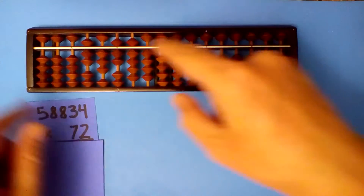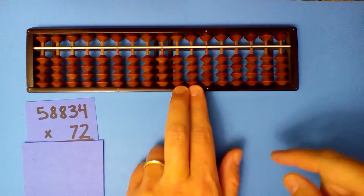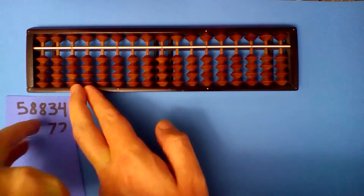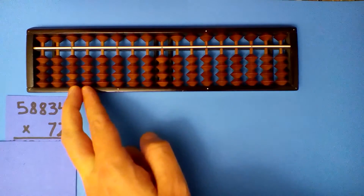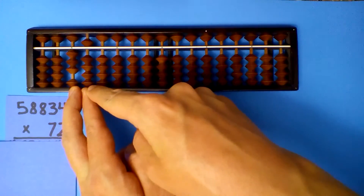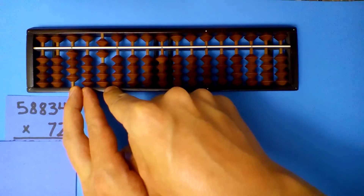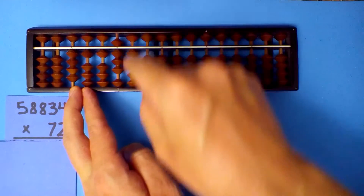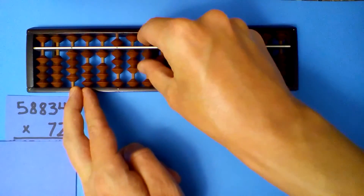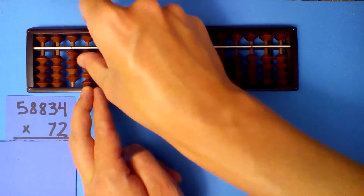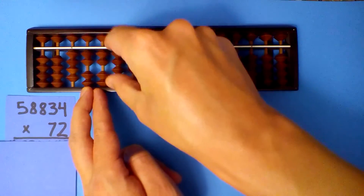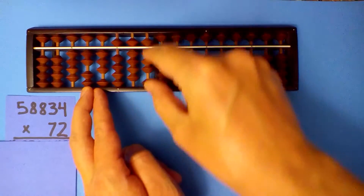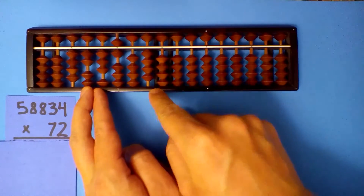58,834 times 72. Tenths and hundredths, 7 digits total: 1, 2, 3, 4, 5, 6, 7. 7 times 5 is 35, 7 times 8 is 56, 7 times 8 is 56, 7 times 3 is 21, 7 times 4 is 28. 2 times 5 is 10, 2 times 8 is 16, 2 times 8 is 16, 2 times 8 is 16, 2 times 3 is 6, 2 times 4 is 8.